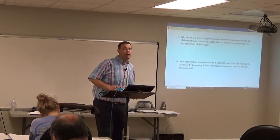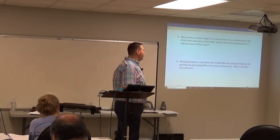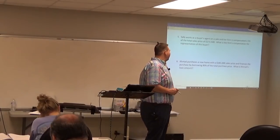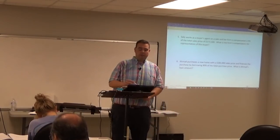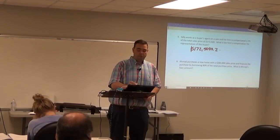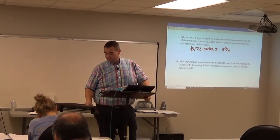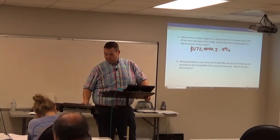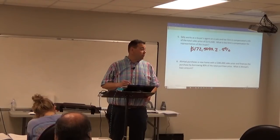Sally works as a buyer's agent on the sale and her firm is compensated 2.5% of the total sales price of $172,500. What's the firm's compensation for representation of the buyer? Type $172,500 times 2.5% — that gives you $4,312.50.